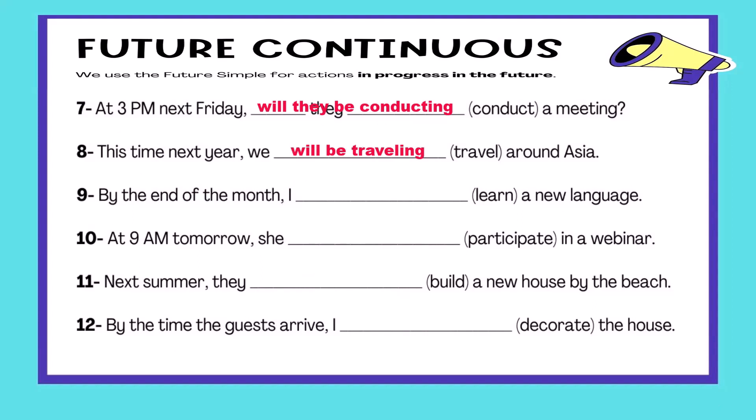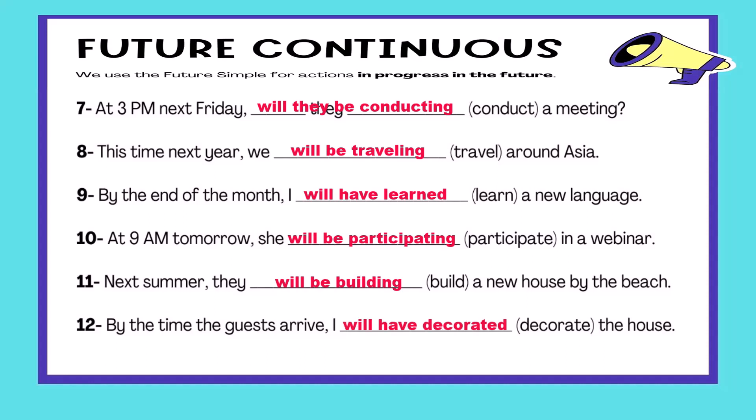Number eight: This time next year, we will be traveling around Asia. Number nine: By the end of the month, I will have learned a new language. Number ten: At 9am tomorrow, she will be participating in a webinar. Number eleven: Next summer, they will be building a new house by the beach. Number twelve: By the time the guests arrive, I will have decorated the house.